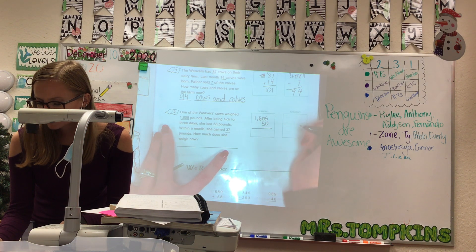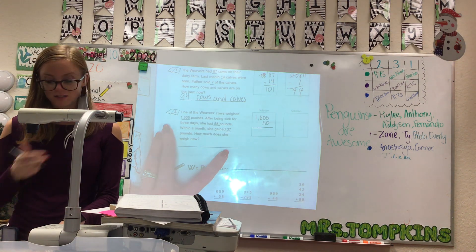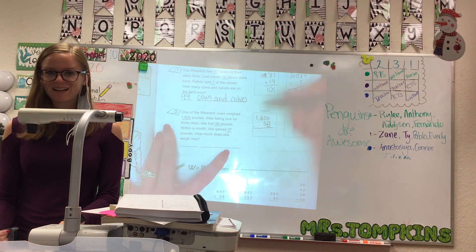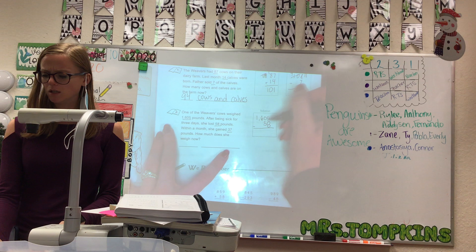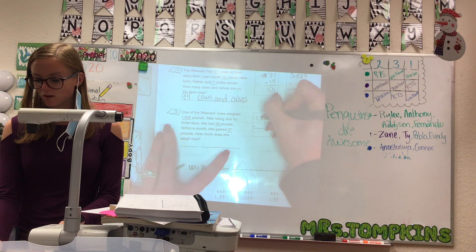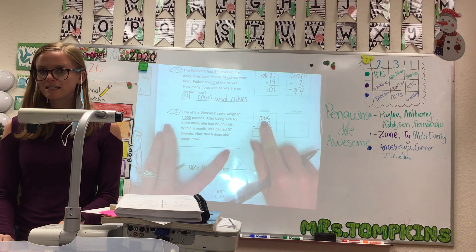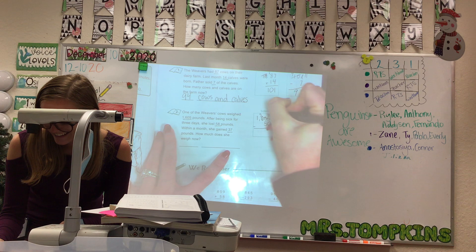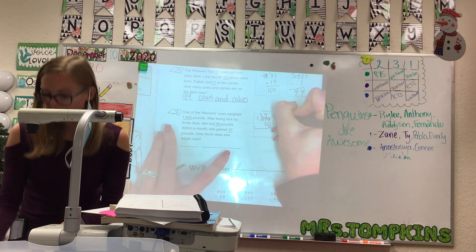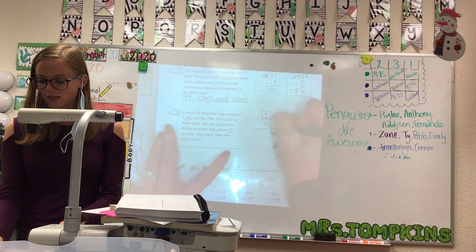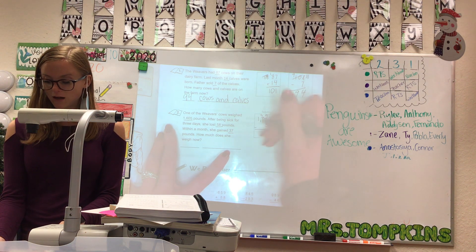Am I going to add these together or subtract them? Take away — because she lost 58 pounds. What's 5 minus 8? Oh, you can't do that. It's a 0, so you have to cross out the 0 and the 6. I have to cross them both out. What's 1 less than 60, Everly? 59. Good. I change my 5 to a 15. What's 15 minus 8? 7. What's 9 minus 5? 4. And then I just need to bring down the 5 and bring down the 1.